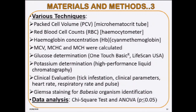The various techniques used included PCV, red blood cell count, hemoglobin concentration, and MCV, MCHC, and MCH, all calculated from hematocrit values. Glucose was determined using a One Touch Basic Life Scan glucometer. Potassium level was determined using high-performance liquid chromatography. We clinically evaluated tick infestation using parameters such as heart rate, respiratory rate, pulse, and rectal temperature. Giemsa staining was used for Babesia bigemina identification. Data analysis used chi-square test and one-way ANOVA.